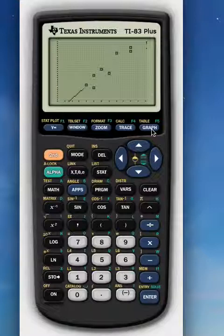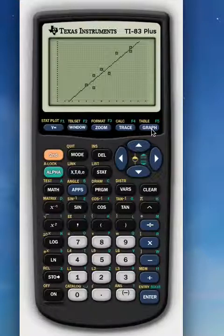Now, when I go back to my graph, there's my linear regression line. All graphed in nice and neat.